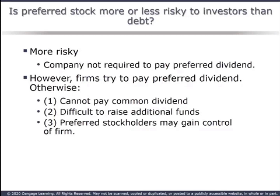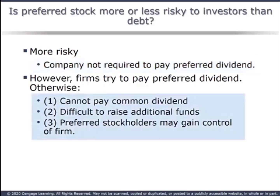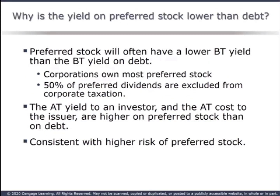Preferred stock is riskier than debt. Remember the bankruptcy priority list? The order is debt, preferred, and at the bottom, common stock. So preferred is riskier than debt but less risky than common stock. A firm can skip a preferred dividend, but they try not to, because if they do skip it, they're precluded from paying any common dividends until the preferred ones are caught up — and it's a signal that the firm doesn't have the cash needed to pay dividends. To compare costs correctly, we should compare the after-tax cost. The after-tax cost of preferred at 9% is higher than the after-tax cost of debt at 7.5%, consistent with the riskier nature of preferred.